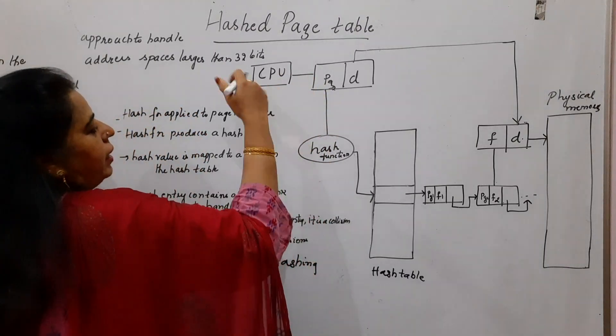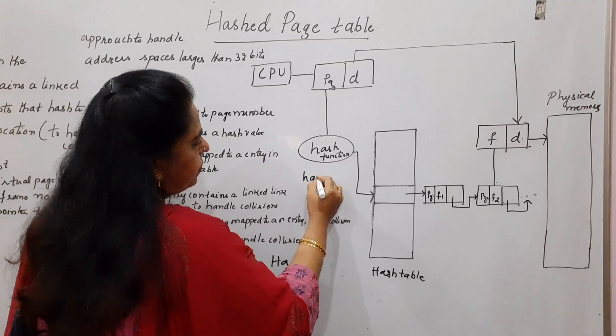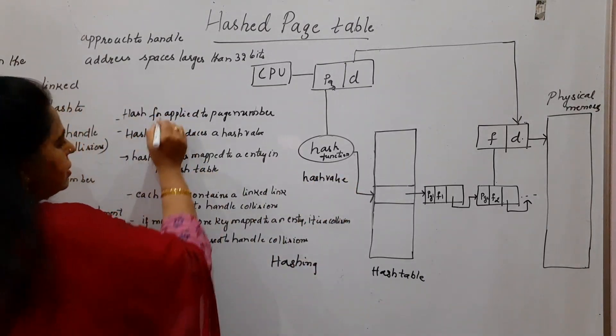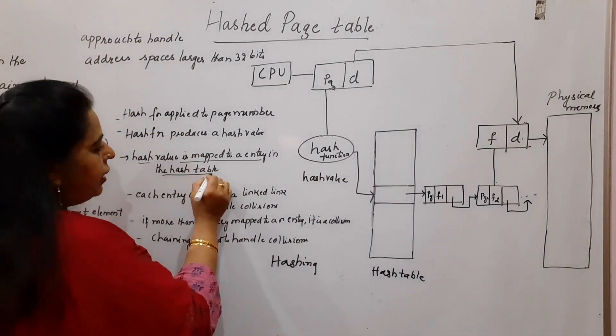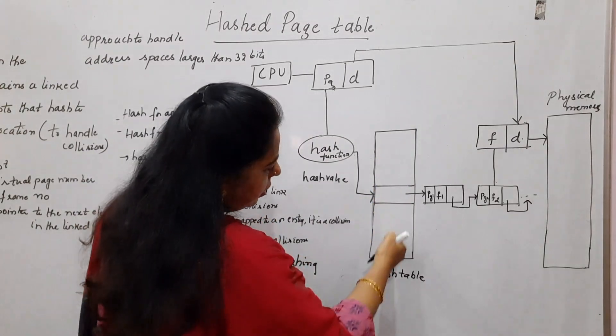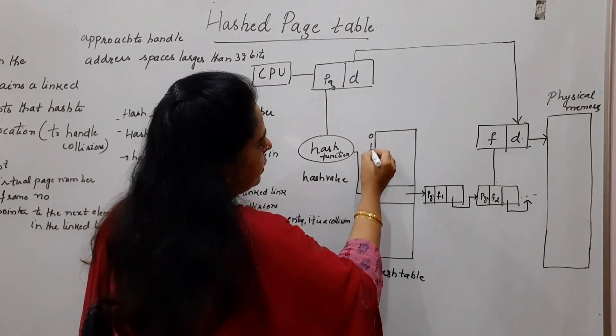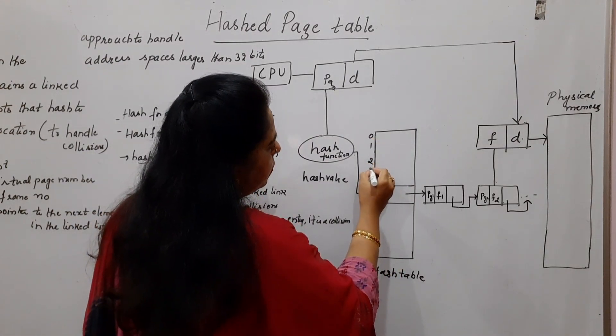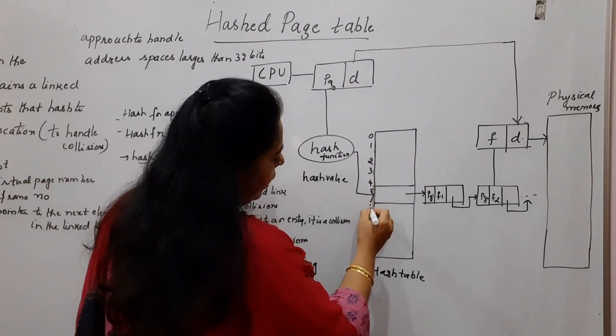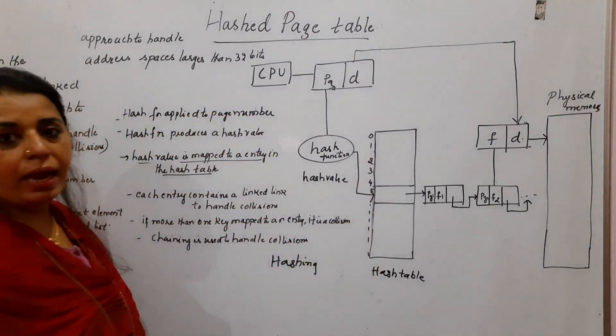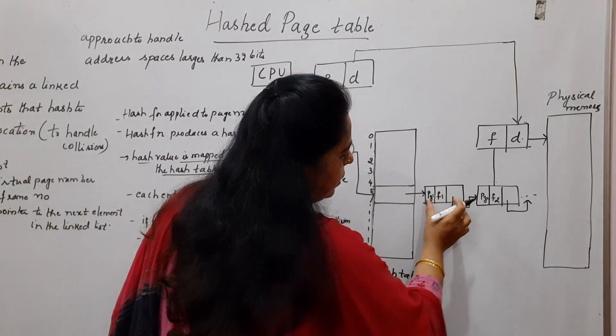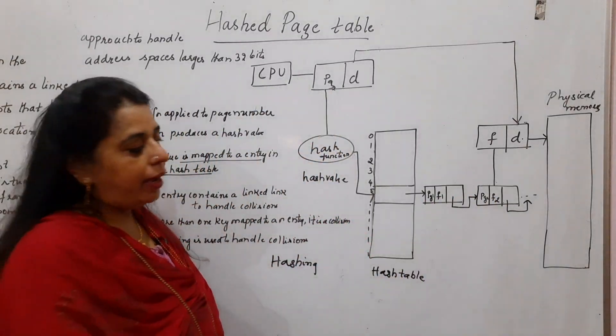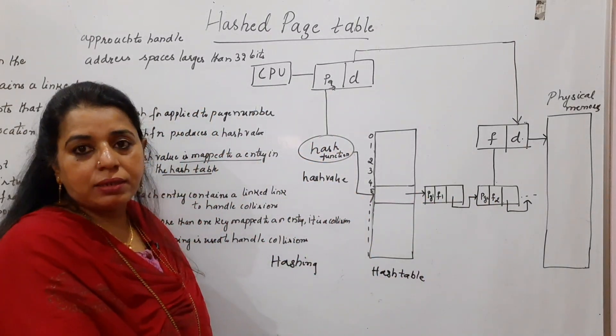Then once you apply, it will produce a hash value. Hash value is mapped to an entry in the hash table. This is the hash table. It has got entries like 0, 1, 2, 3, 4, 5. Like this, you will be having the different entries in the hash table. Each entry is storing a linked list. And I will tell you what exactly this linked list has got.